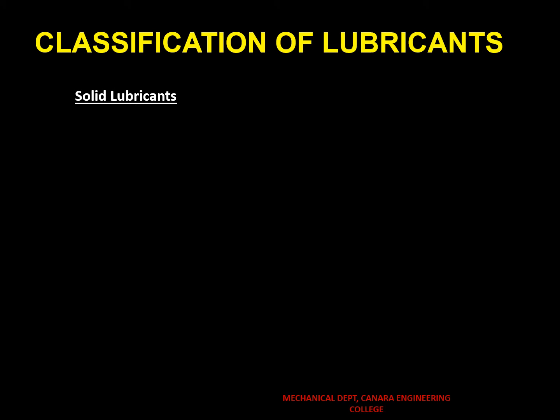Classification of lubricants — solid lubricants. A solid lubricant is a solid material which is applied or inserted between two moving surfaces or bearing surfaces. The three main requirements for a material to be a solid lubricant are the ability to support the applied load without major distortion, a low coefficient of friction, and a low rate of wear.